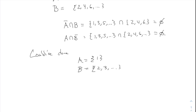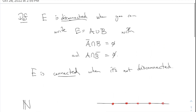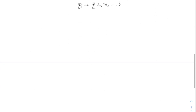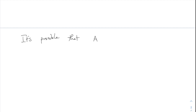I want to talk for a moment about why we need the closures in this definition. The whole point is that E is written as two separate parts — isn't it good enough to just say A intersect B is empty, meaning there's no overlap? Why do we also need the closure? It turns out it is necessary. It's possible that A intersect B is empty but A-closure intersect B is not empty — this is an important situation.